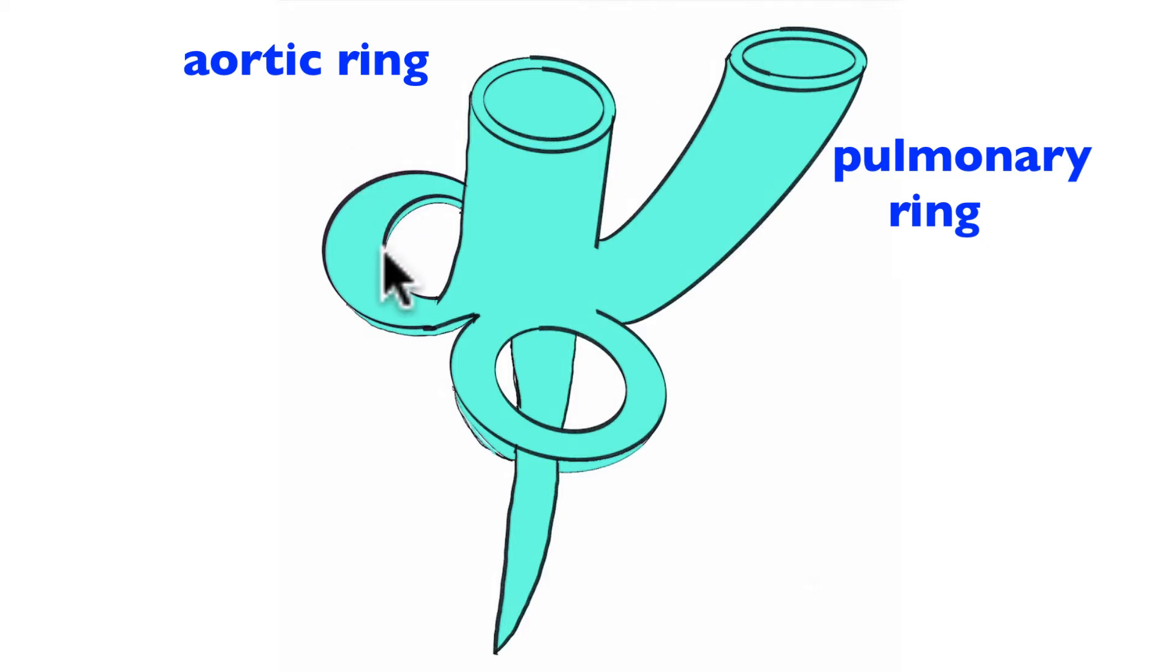This right here would be the bicuspid ring for the mitral valve, or the left atrial ventricular valve. And lastly, this would be the ring for the tricuspid valve, known as the tricuspid ring.